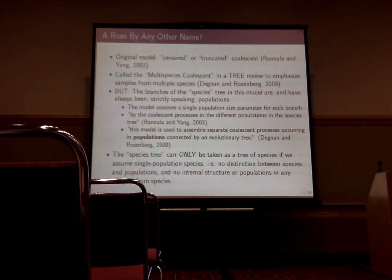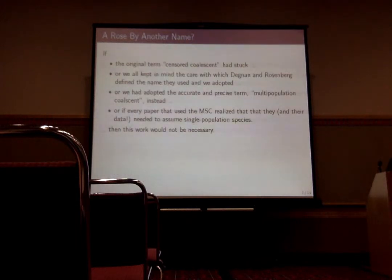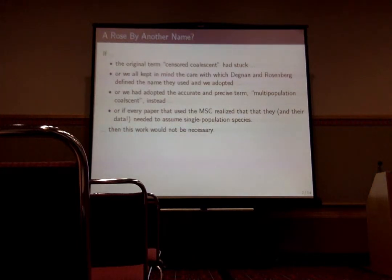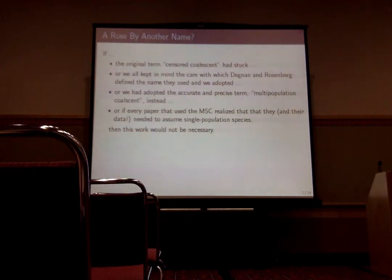The species tree can only be taken as a tree of species if you assume a very specific idea of what species are — panmictic, idealized, random-mating populations with no structure within them whatsoever. If the original term 'censored coalescent' had stuck, or if we'd adopted a more accurate term — the 'multi-population coalescent' — perhaps this paper would not have been written.